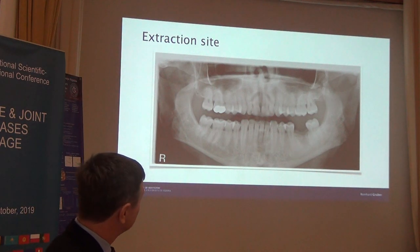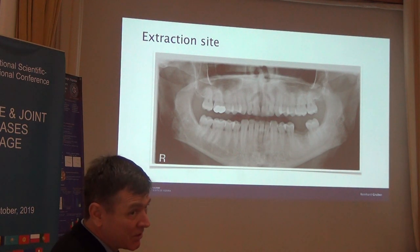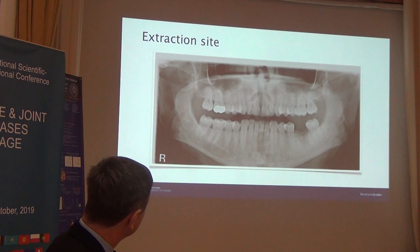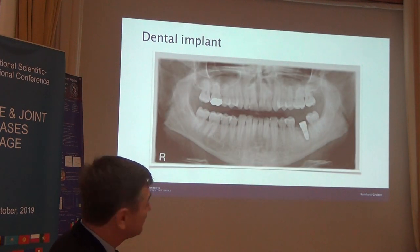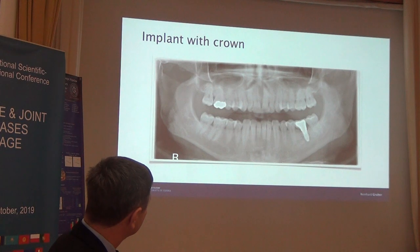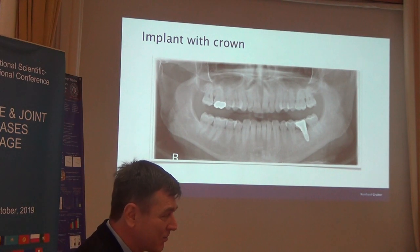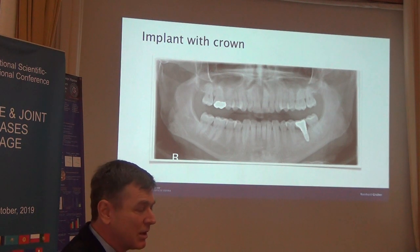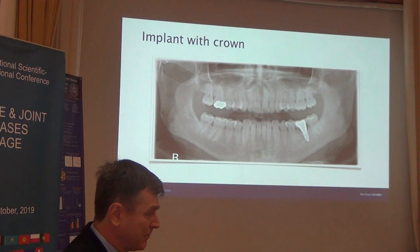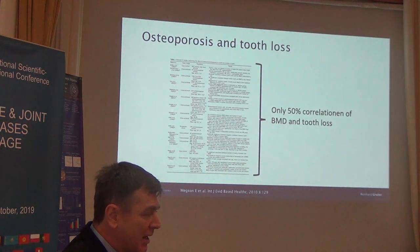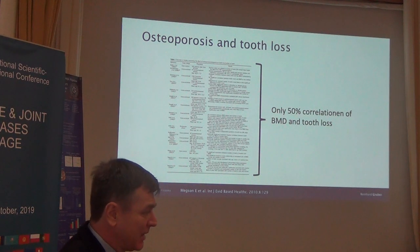You see a patient — his name is Reinhard — with obvious tooth loss, who then receives an implant. And this patient is me, so it's my own case. The questions are: how is this implant osseointegrated, why does tooth loss occur, and is there a correlation with osteoporosis?